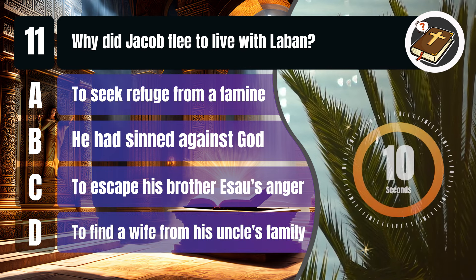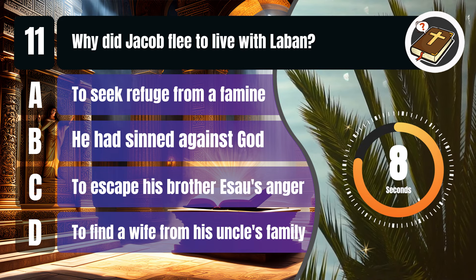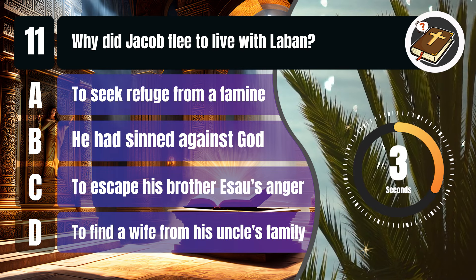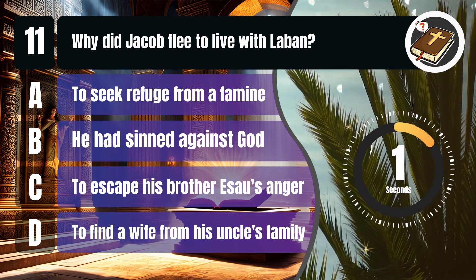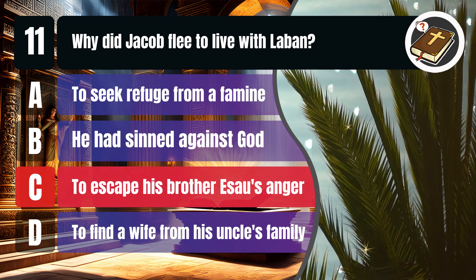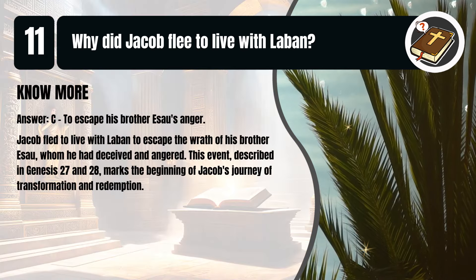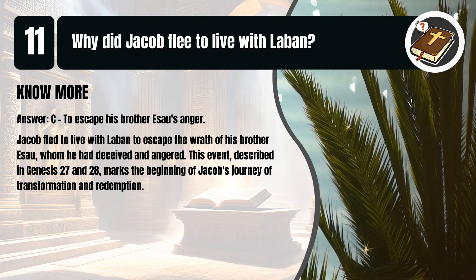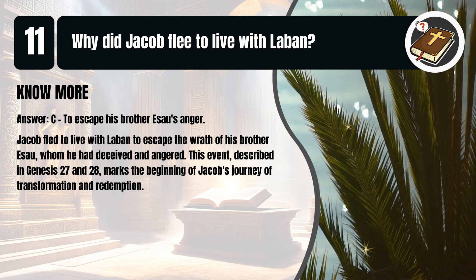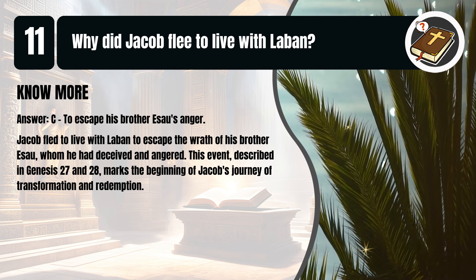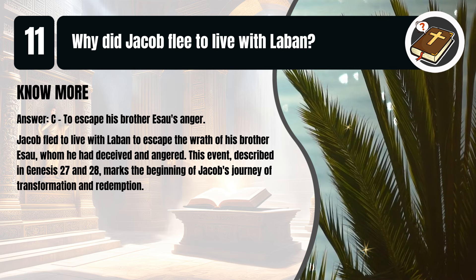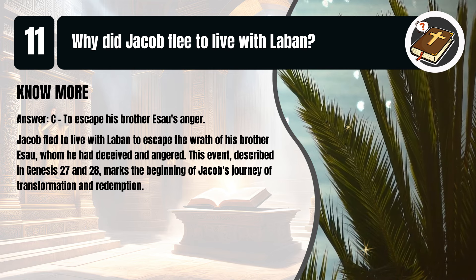That's C. To escape his brother Esau's anger. Jacob fled to live with Laban to escape the wrath of his brother Esau, whom he had deceived and angered. This event, described in Genesis, chapters 27 and 28, marks the beginning of Jacob's journey of transformation and redemption.